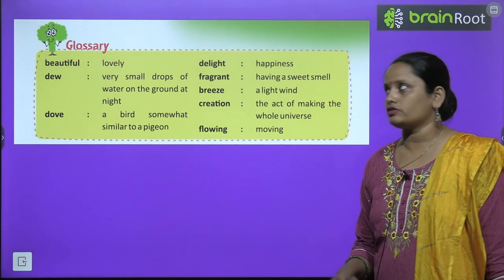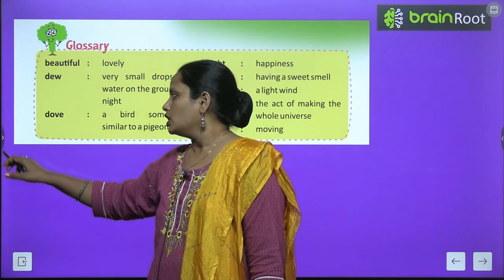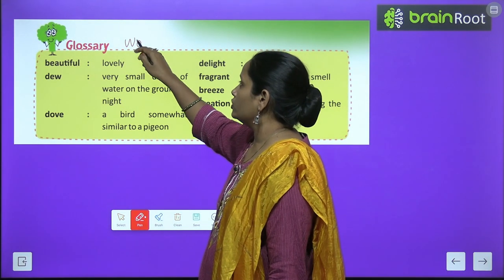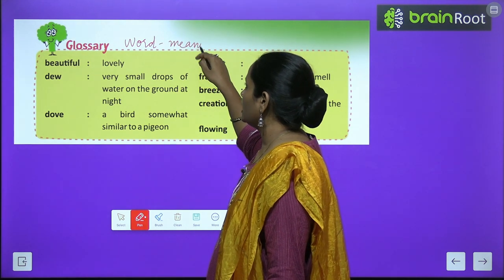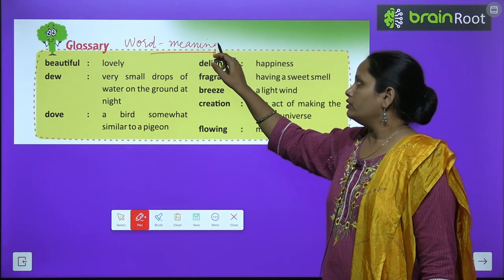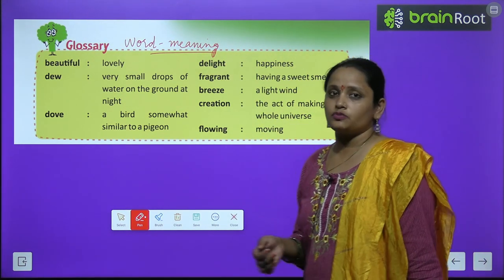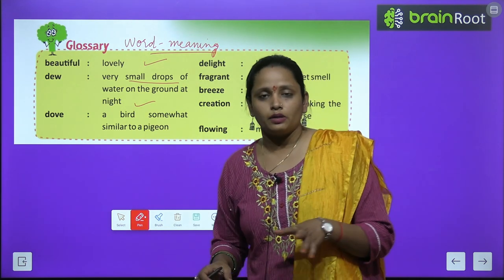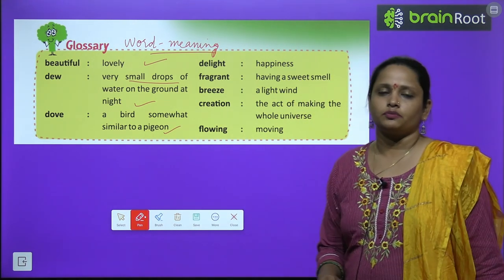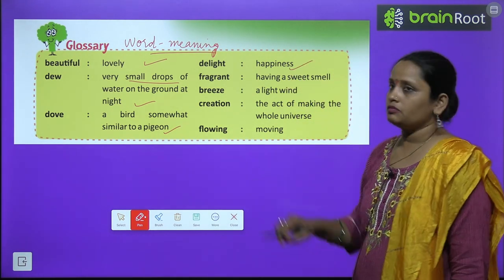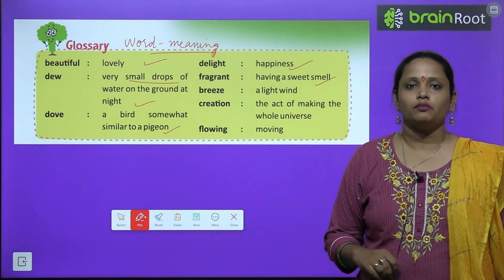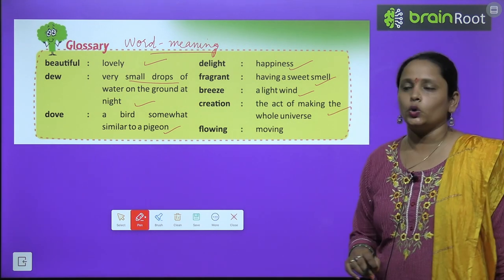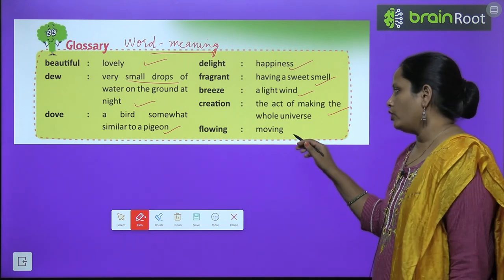You have to learn this poem, children. Now let's move on to the glossary section. Dove is a bird somewhat similar to a pigeon. Delight means happiness. Fragrant means having a sweet smell. Breeze means a light wind. Creation means the act of making the whole universe. Flowing means moving.